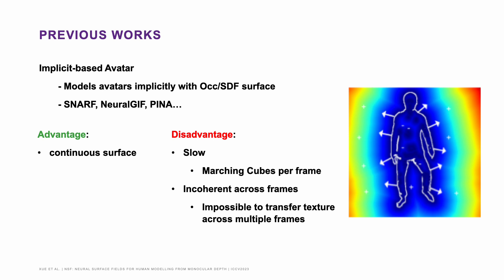To overcome these limitations, implicit-based methods are proposed to learn a common representation that does not rely on the explicit surface, for example on occupancy or distance functions. These representations are continuous and not limited to a single discretization. However, extracting a mesh from them is a slow process — it requires running the marching cube algorithm for each single frame, which is impractical and does not produce consistent topology across all frames.